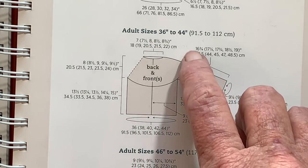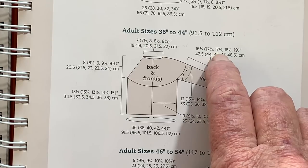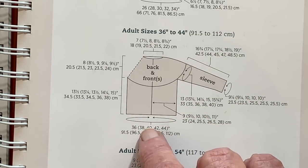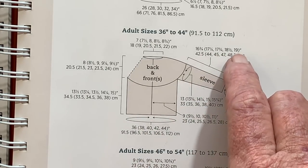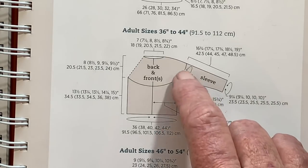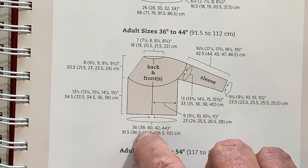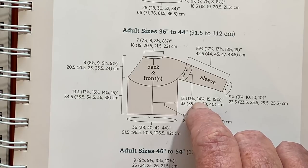Over here on the sleeve length the third number in is 17 and 3/4. That goes with size 40. If you looked at 19 that goes with size 44. The upper arm circumference for size 40 would be 14 and 1/4.